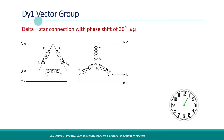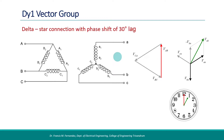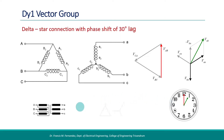Now the DY1 vector group — the primary is delta connected and the secondary winding is star connected. Since we have taken line voltage VAB as reference for the primary side, VAB should be considered for the secondary side also. In the star connected secondary, VAB is obtained by VA minus VB, and the VAB phasor is obtained accordingly. Here also the secondary voltage is lagging by 30 degrees from the primary side — the 1 o'clock position matches here as well. The simplified connection diagram and the displacement diagram clearly represent the delta-star connection and the 30-degree lagging phase angle.